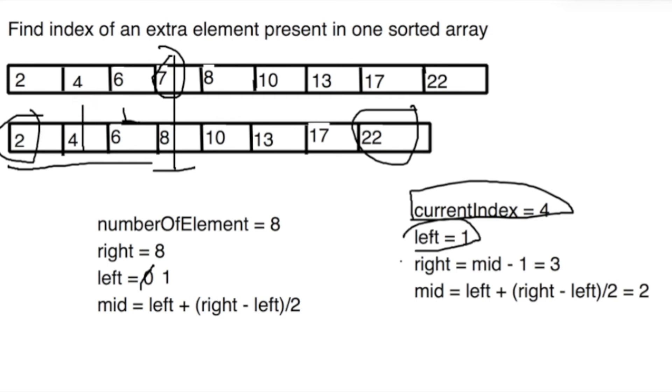Same formula, the new mid is 2. We will check with the first array, same. Now we will move, so this is the only element that's remaining. We will update our left to this element.